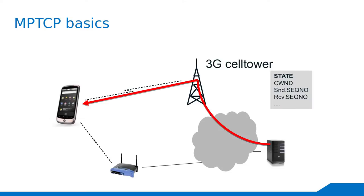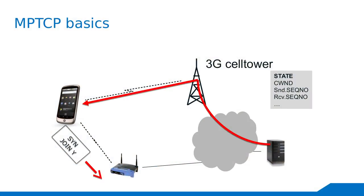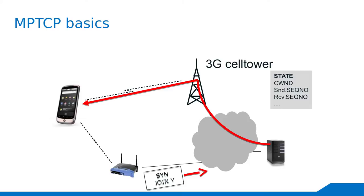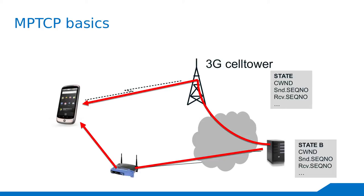Once one connection is established, you can see the state for that connection — just a regular TCP connection state with sequence numbers, the window, and so on. If we then also connect to a Wi-Fi hotspot, the MPTCP stack will detect that a new interface is available and try to open a subflow — another TCP connection — by sending a special SYN with the MP-Join option. This tells the server to attach the second TCP connection to the same logical MPTCP connection.